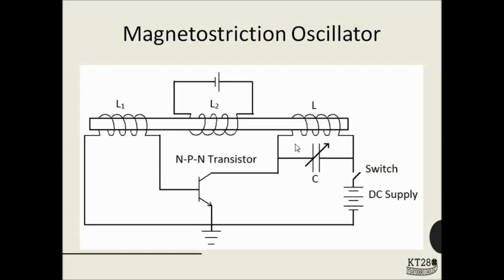Gradually this energy will decrease. So in order to maintain the amplitude of the current and in turn maintain the amplitude of the ultrasound which is going to be produced, we need to provide some energy. This energy is supplied by using feedback and a transistor. The feedback is taken with the help of this ferromagnetic rod — the same rod which we are going to use to produce ultrasonic waves. As the coil produces a magnetic field, this field will be along the length of the ferromagnetic rod, and because of the magnetostriction effect this rod is going to expand.